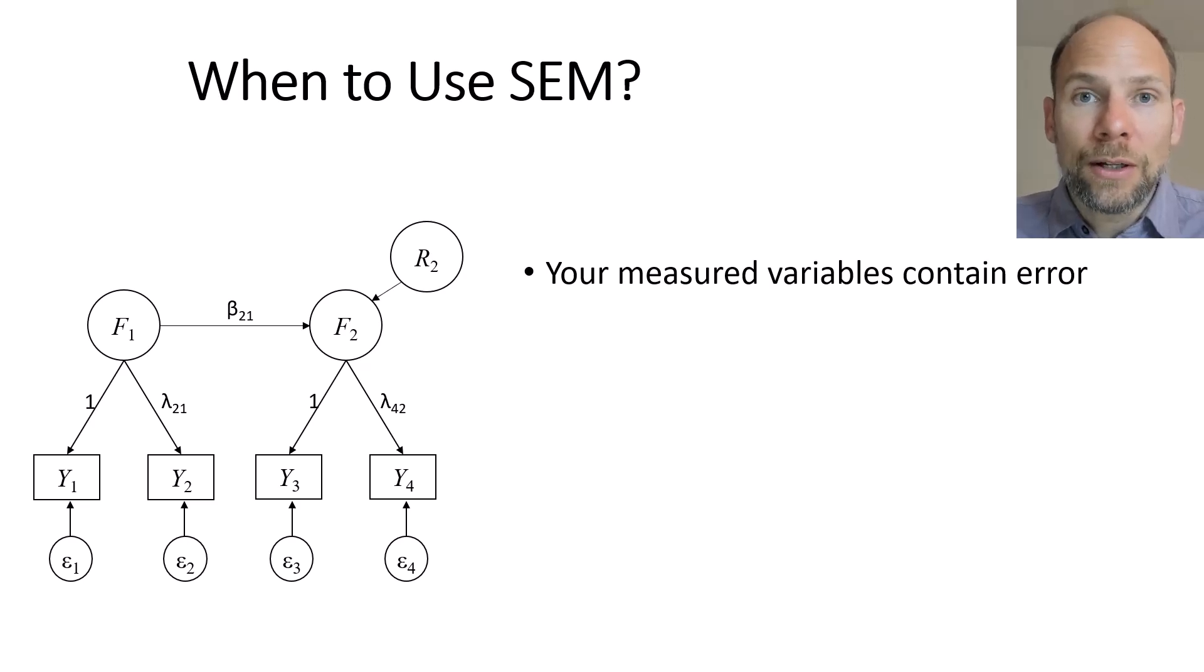Likewise, when you conduct conventional multiple linear regression analysis, for example, ordinary least squares regression, then one assumption is that the independent variables in your regression model are measured without error. And if they're not measured without error, then the regression coefficients may be biased. Their standard errors may be biased. Tests of significance for the regression coefficients may be biased. Also, when you run path analysis with manifest variables and the manifest variables are not error-free, then the path analytic results may also be incorrect, may be biased. Structural equation modeling with latent variables addresses this issue by introducing latent variables. So that's maybe the most fundamental reason to use SEM when you have measurements that are error-prone, that contain measurement error, then you want to correct for that.